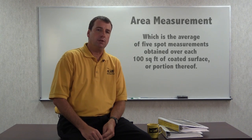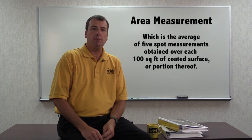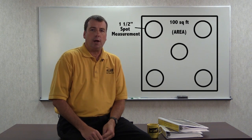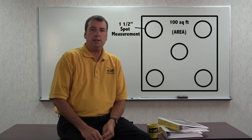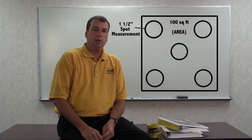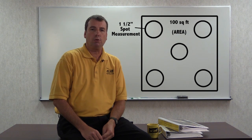The last definition is area measurement, which is the average of five spot measurements obtained over each 100 square feet of coated surface or portion thereof. An area is defined as approximately 100 square feet. Within each area, five arbitrarily spaced spots are selected, and each spot consists of a one and a half inch diameter circle.